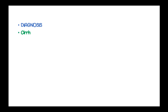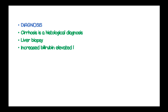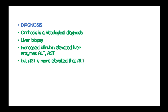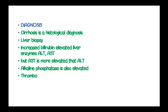The diagnosis of liver cirrhosis is histological and a liver biopsy is taken for histological studies. Increased bilirubin levels and elevated liver enzymes such as ALT and AST are found, with AST more elevated compared to alanine aminotransferase. Alkaline phosphatase is also elevated, and thrombocytopenia, leukopenia, and anemia are present in these patients.